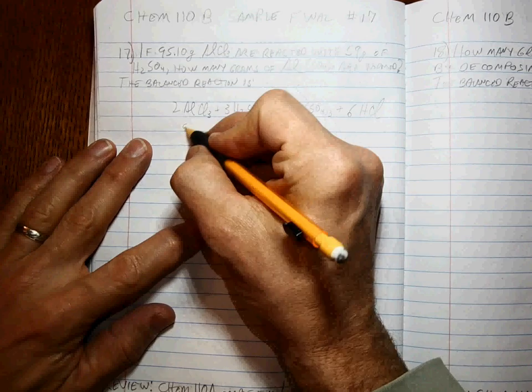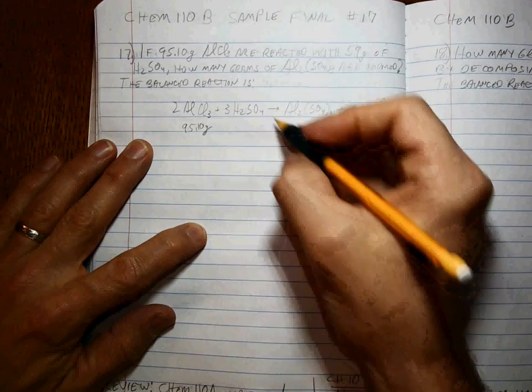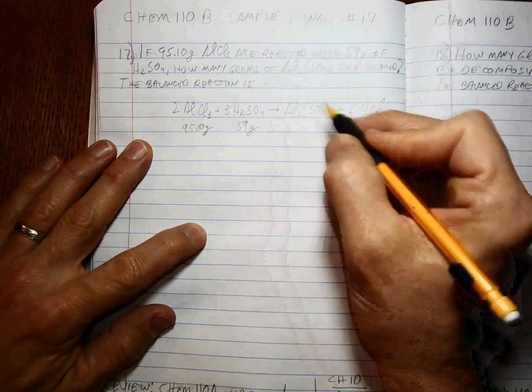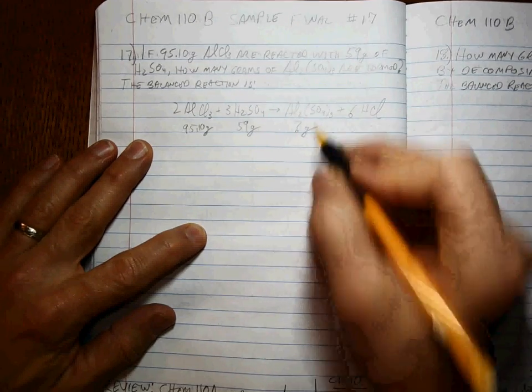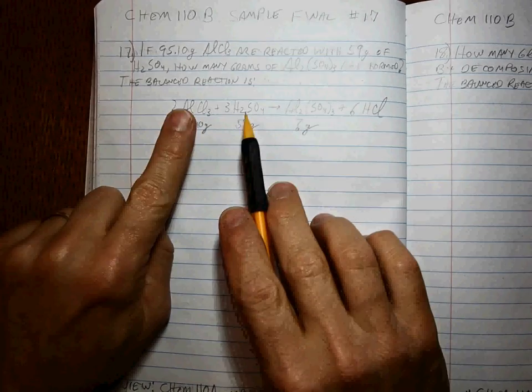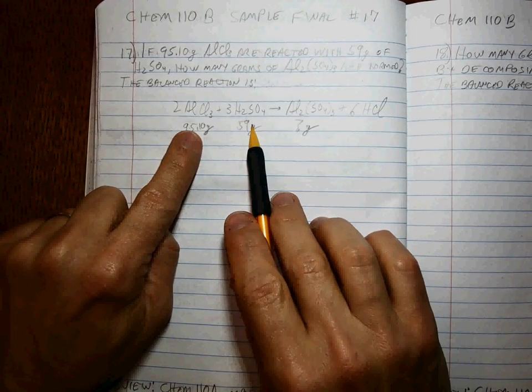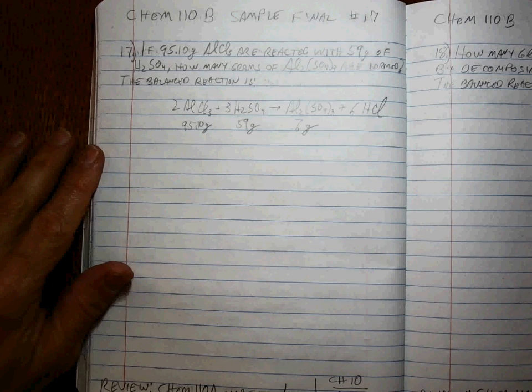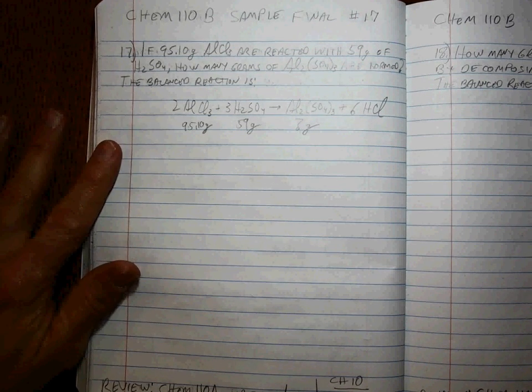So we've got 95.10 grams of this, we've got 59 grams of this, and we want to know how many grams of that. But since we have that reaction and we've got some amount of both reactants, that means it's a limiting reagent problem, and your job is to figure out which is the limiting reagent.